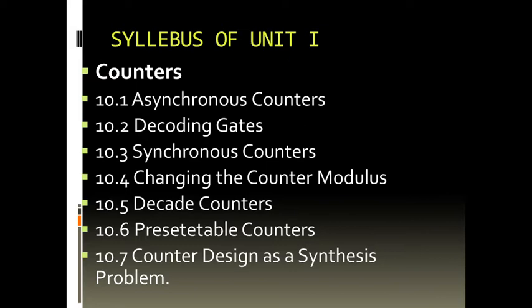First, asynchronous counters. In the asynchronous counter, there is a ripple counter — up counting, down counting, and up-down counting. There is a three-bit and four-bit ripple counter which you are going to study. Then there are decoding gates, which can be either AND gate, NOR gate, etc., which decode a particular state out of a number of discrete states. Then there are certain synchronous counters you have to study.